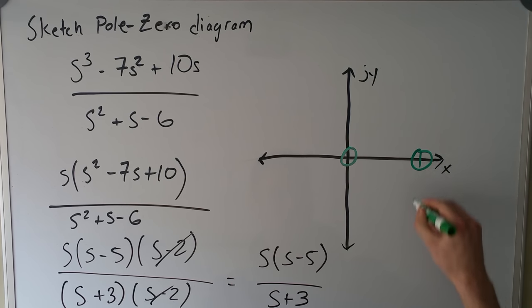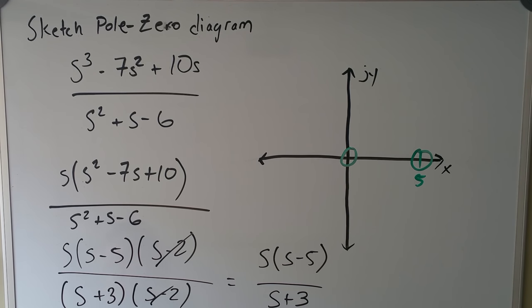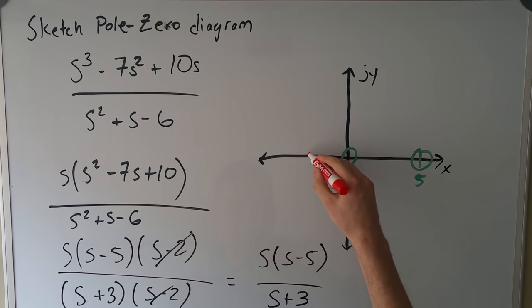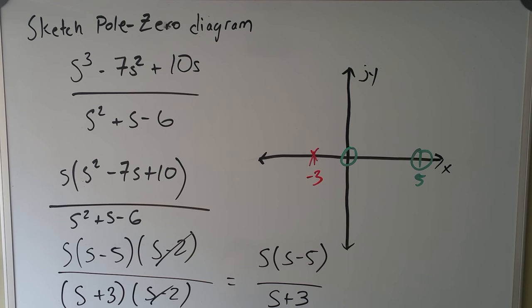To do our poles, we move on to the bottom of the fraction. Since it's s plus 3, we actually go in the minus direction of the x plane. So we put an x right here, mark this at minus 3, and that's it. That's your pole-zero diagram.